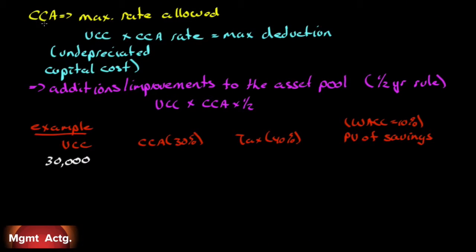Our CCA, or capital cost allowance, is the maximum rate allowed by the government. There is no straight-line depreciation with CCA — everything is based on a declining balance, called an undepreciated capital cost. We take our undepreciated capital cost times our CCA rate, and that is our maximum deduction for the year. Any additions or improvements go to the asset pool altogether; we group assets into a pool and take the CCA rate on the entire pool. But we have to follow the half-year rule: any new addition to the pool only gets half of the CCA rate for the year.